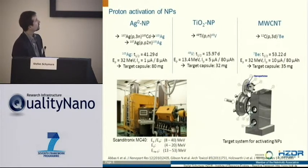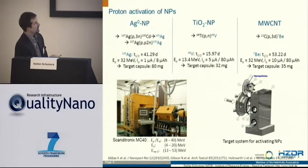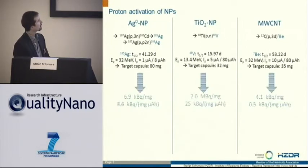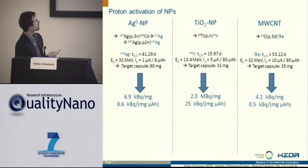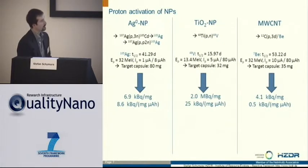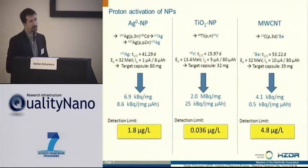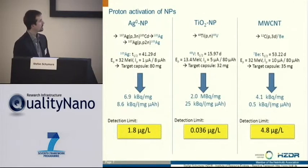We used experimental conditions developed by our colleagues at the JRC. We used their cyclotron, and the nanoparticles are put inside a target capsule and irradiated for eight hours, mainly, or even longer. What we get are yields of around seven kilobecquerel for the titania, even two megabecquerel, and here only four kilobecquerel per milligram. To translate this into a non-radiochemist language, this comes to detection limits — especially for the titania — in the nanogram per liter range. These are exceptionally low detection limits.